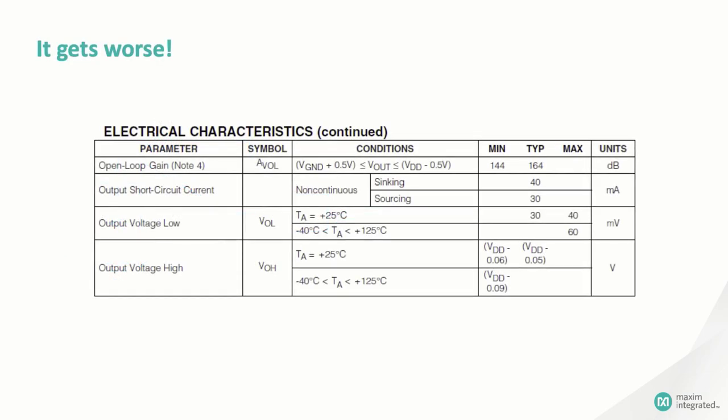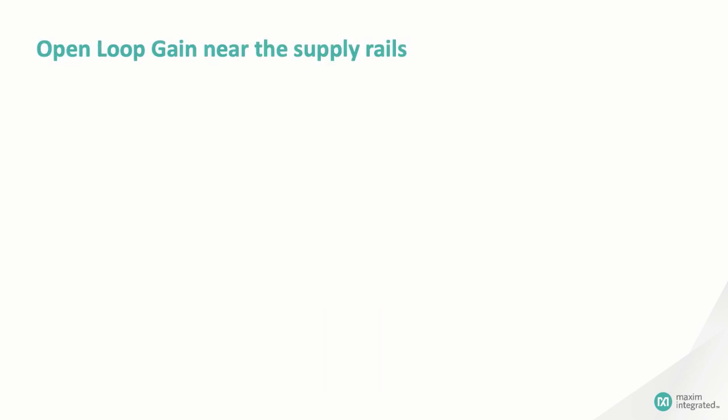Take a look at this datasheet for one of Maxim's precision op-amps. The typical open loop gain is 164 decibels. Man, that's great! And the device can drive the output to within 60 or so millivolts of the rails. Outstanding! But look at the open loop gain spec again - it's only good when Vout is no closer than a half volt to the rails. What gives? And what happens to the gain if you do get within a half volt of the rail?